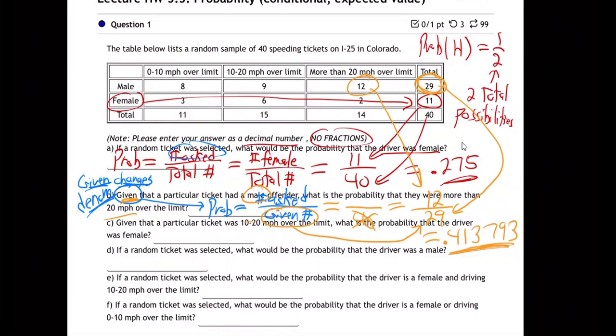I have a question — for part B, you put in 12 and then divided by 29? Yeah, 12 divided by 29. That's right. Because there were 12 males that went over 20 miles per hour out of 29 males. Because we're given that it's a male, that changes the denominator from 40 to 29 because there are only 29 males. That's what you do with given — you change the denominator to the group they're speaking of.